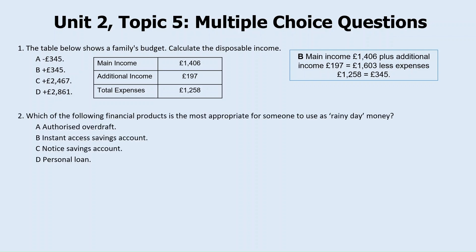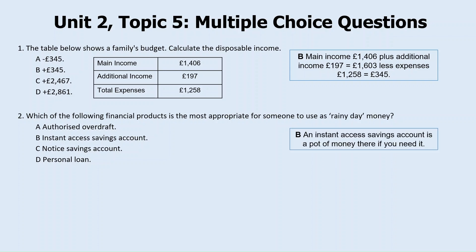Question two: which of the following financial products is most appropriate for someone to use as rainy day money? Is it an authorised overdraft, an instant access savings account, a notice savings account, or a personal loan? The answer is B — an instant access savings account is a pot of money there if you need it. A notice savings account requires you to give notice to the provider, so it would not be suitable if you needed the money instantly.